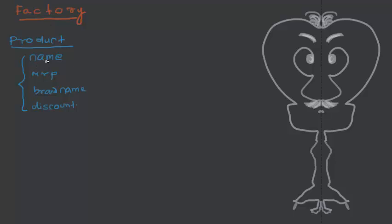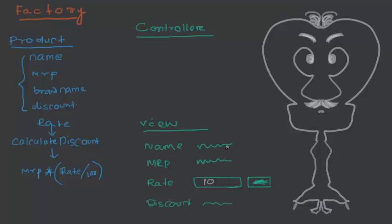Let's say we have our data model of product — we have the name of the product, MRP, the brand name, and the discount. We have a function called calculate discount — if someone passes a rate like 10% or 20%, this function will multiply MRP by the rate divided by 100 to get that discount. In the view, we want to display the product name and MRP, allow somebody to enter the rate, and once they click the button the discount should be automatically calculated. Any functionality available in the factory — the view cannot directly access it — so we have to write a proxy method.